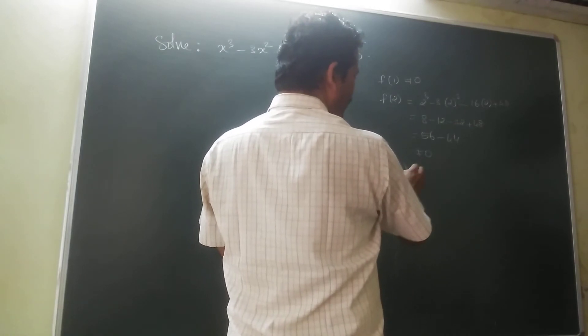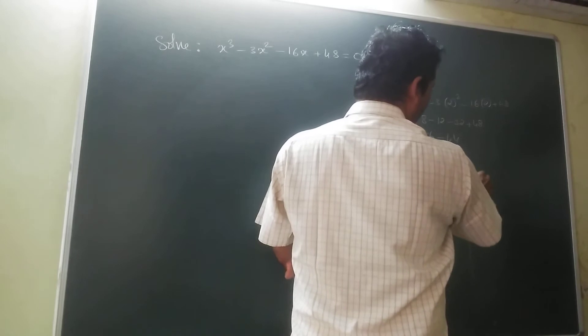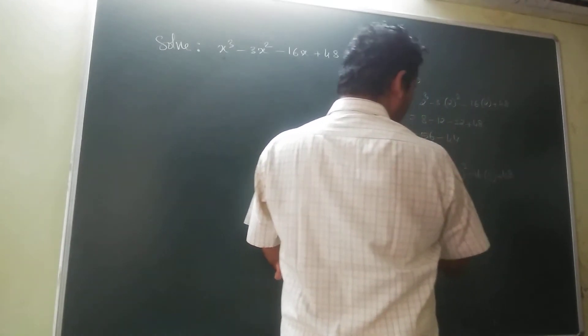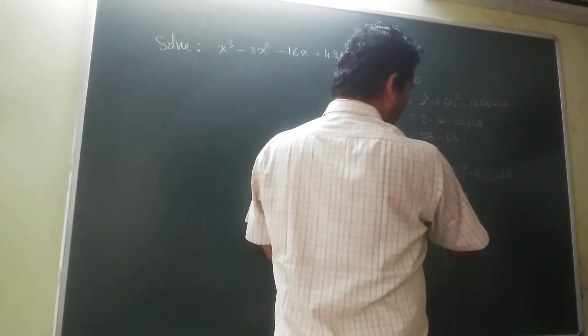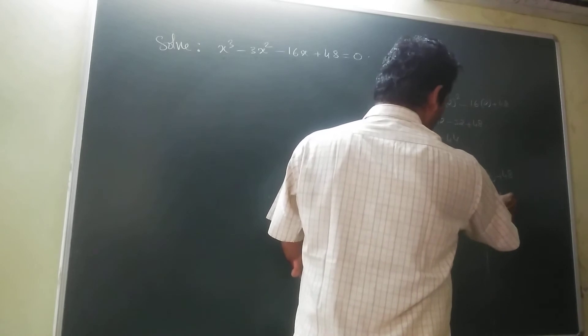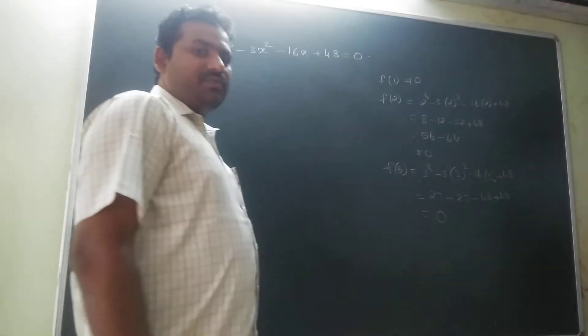Now check f of 3: 3 cube minus 3 into 3 square minus 16 into 3 plus 48. 3 cube is 27, minus 3 into 9 is 27, minus 48 plus 48. So this is 0. f of 3 equal to 0.